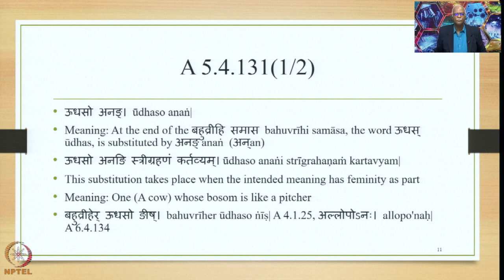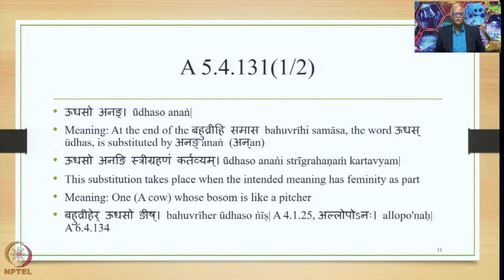Sutra 5.4.131 is Udhaso Anang. At the end of the Bahuvrihi Samasa, the word Udhas is substituted by Anang, which is An having the marker N with a peculiar function. A Vartika states Udhaso Anang is Tri Grahanam Kartavyam — this substitution takes place when the intended meaning has femininity in part, for example, 'a cow whose bosom is like a pitcher.'